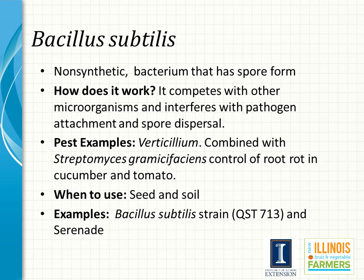Bacillus subtilis is a bacterium in spore form that competes with other microorganisms and interferes with pathogen attachment and further spore dispersal. Pests targeted by Bacillus subtilis include Verticillium. However, when Bacillus subtilis is combined with Streptomyces griseoviridis, it can control root rot of cucumber and tomato. Bacillus subtilis is a preventative pesticide and needs to be applied as a seed treatment or into the soil. Some examples include the Bacillus subtilis strain QST713 and Serenade.